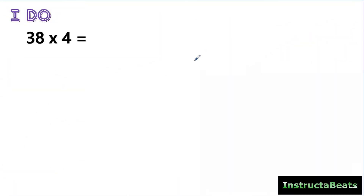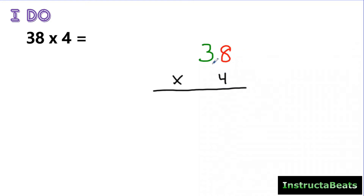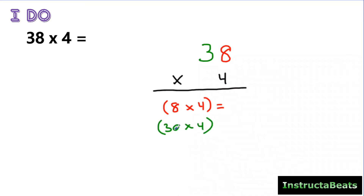Here we have the exact same problem, because that was a great visual of what's actually happening when we do partial products. We're using the distributive property to split apart our array into parts and find the product of each — hence the name partial products. The first thing we want to do is line this up vertically: bigger factor on top, smaller factor on the bottom, with our ones place and tens place lined up. I'm going to color code it to match the visual, so we have 8 groups of 4 and 30 groups of 4. We decomposed 38 into 30 and 8, just like we did in the visual.